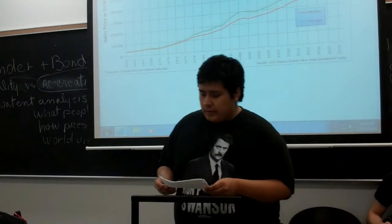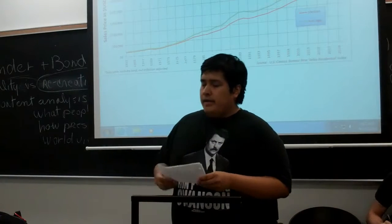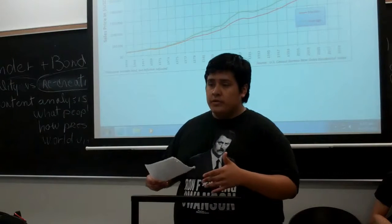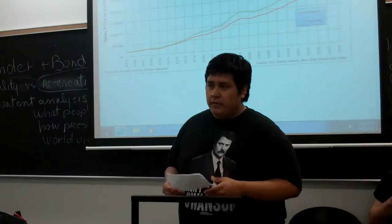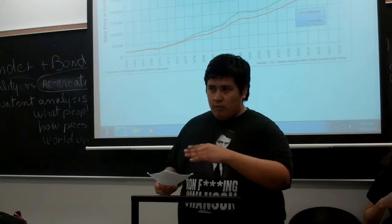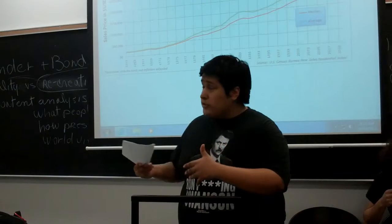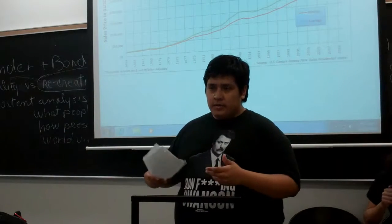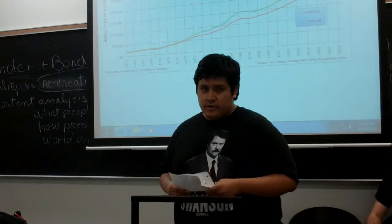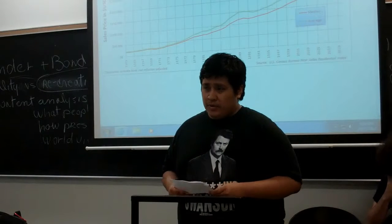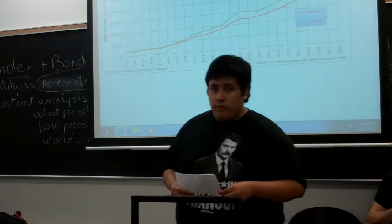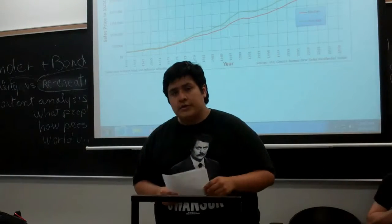This graph shows the effect of derivatives and just how much they affected the price of homes, because the price of property goes up obviously, but not to the extent that it did over the course of 30 years.